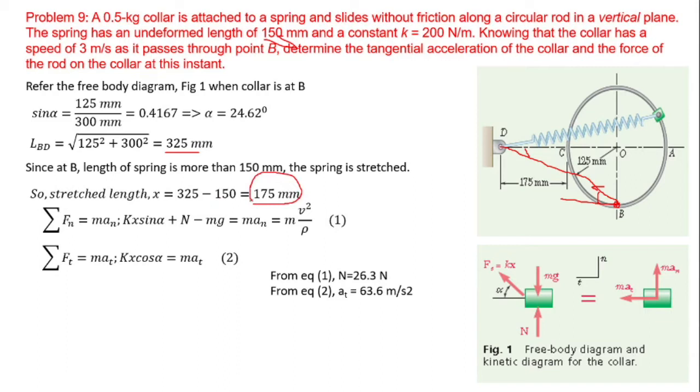Applying the equation of motion in the direction towards center: F_n is equal to mass times a_n. The normal reaction plus the component K times x times sine alpha in this direction equals M times a_n, which is M times v squared divided by rho.